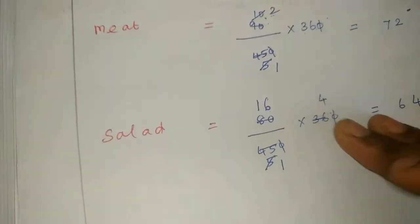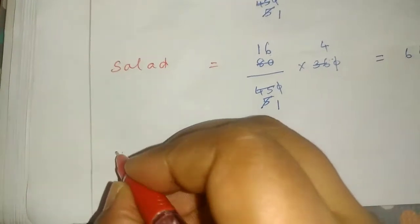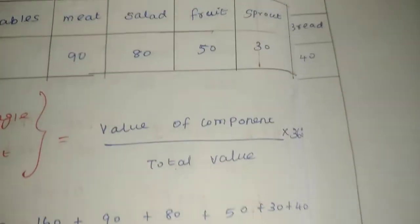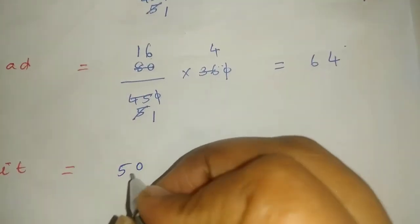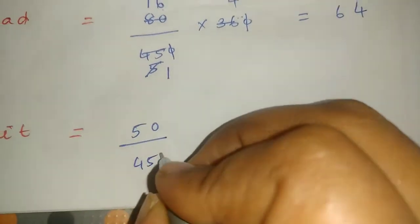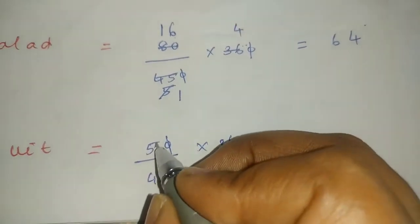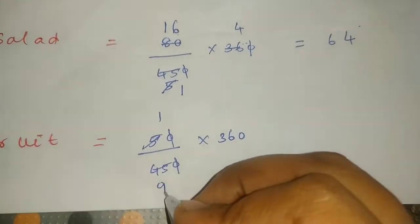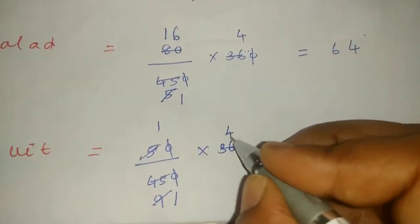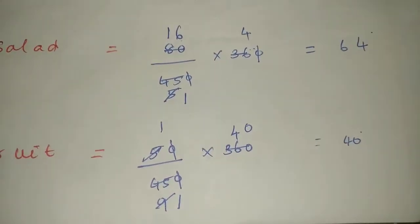Next we calculate Fruit. The value of Fruit is 50. So: 50 divided by total value 450, multiplied by 360. After calculating: every degree for Fruits is 40 degrees.